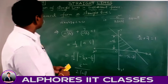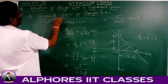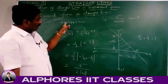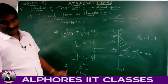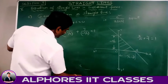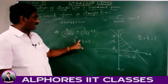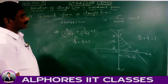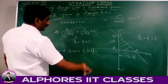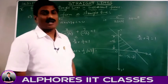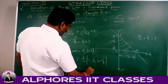Proof: given line ax + by + c = 0. After converting into intercept form: x/(-c/a) + y/(-c/b) = 1. So x-intercept = -c/a and y-intercept = -c/b. Area of triangle OAB = ½|(-c/a)·(-c/b)| = c²/(2|ab|) square units.